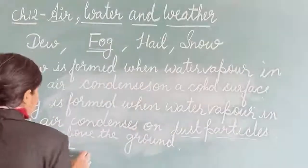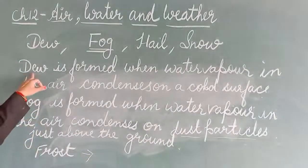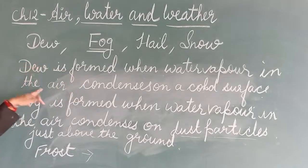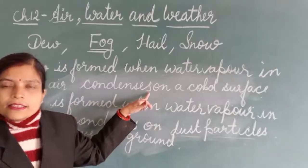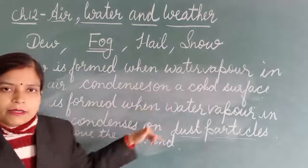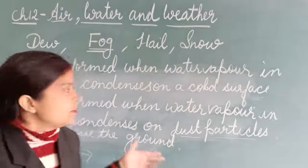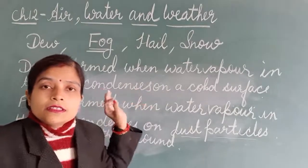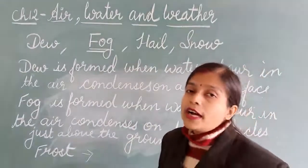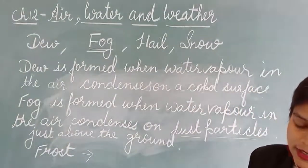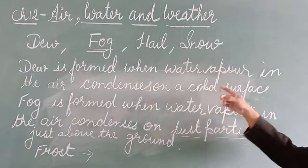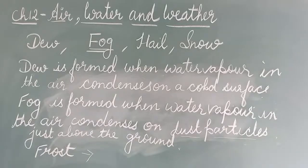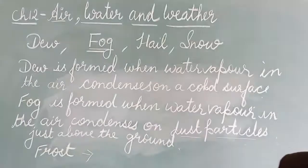You have heard about frost also. Frost is a form of dew. In dew, water vapor in the air condenses as tiny drops of water on a cold surface. But in frost, what happens? The temperature is very low, so it does not convert into tiny drops of water. Instead, it condenses into tiny ice crystals. These ice crystals are only known as frost. So in frost, the water vapor in the air condenses into tiny crystals of ice, and frost is formed.